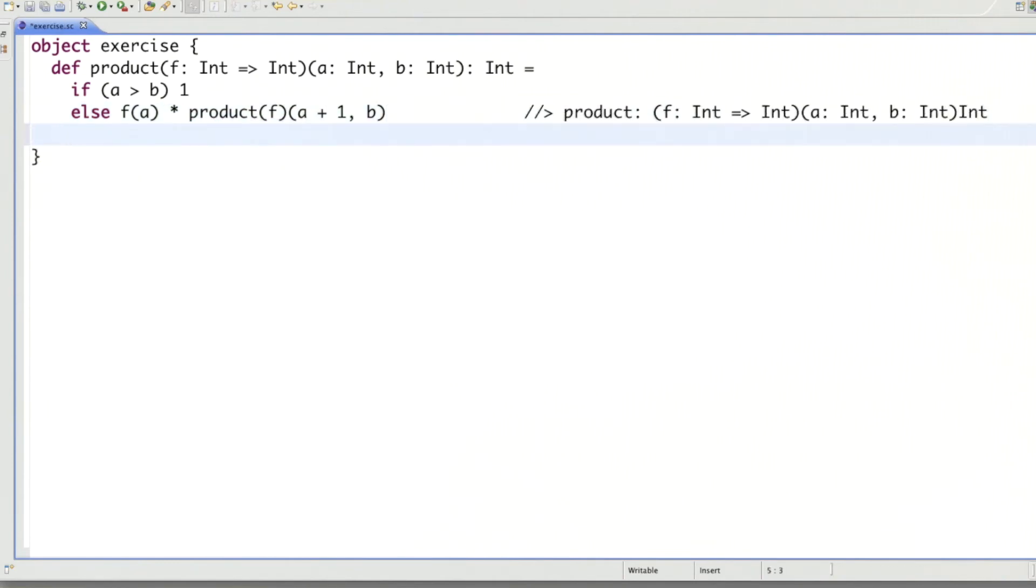Let's test it. Oh, I forgot the function. Let's take the squares of all ints between three and seven. That gives us a value which is hard to check. So let's do a smaller example. 144. That looks correct.